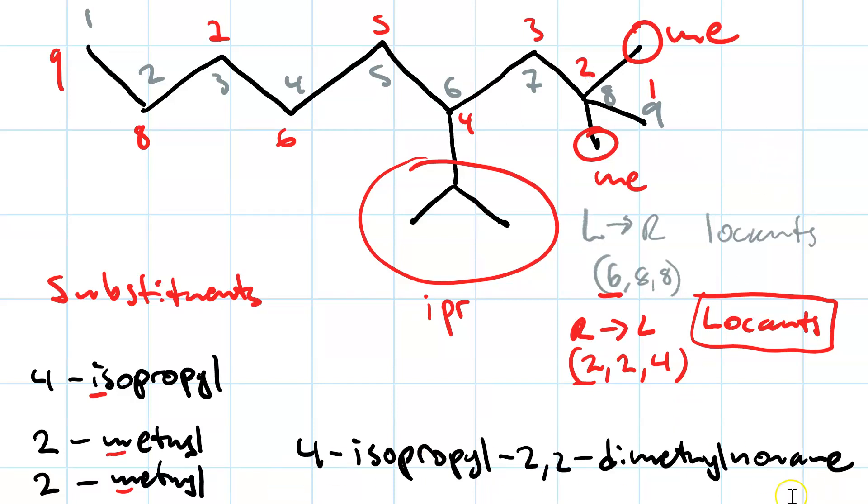And so the full name comes out to 4-isopropyl-2,2-dimethylnonane. No spaces in the name anywhere, dashes to separate numbers from letters, commas to separate numbers from other numbers, a prefix to indicate number of. The di because there are two methyls. And each group gets a locant, even if it's two of the same group.